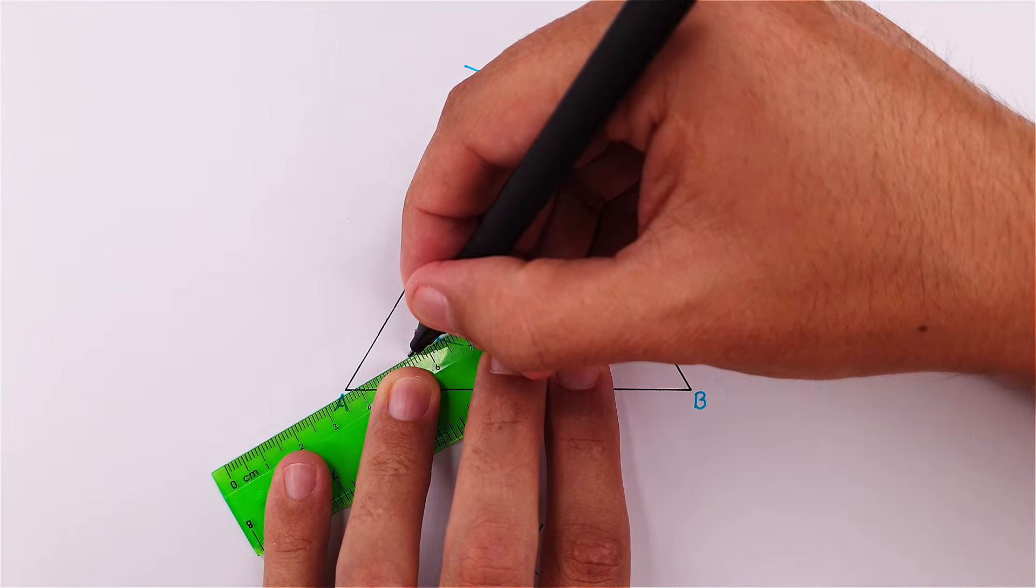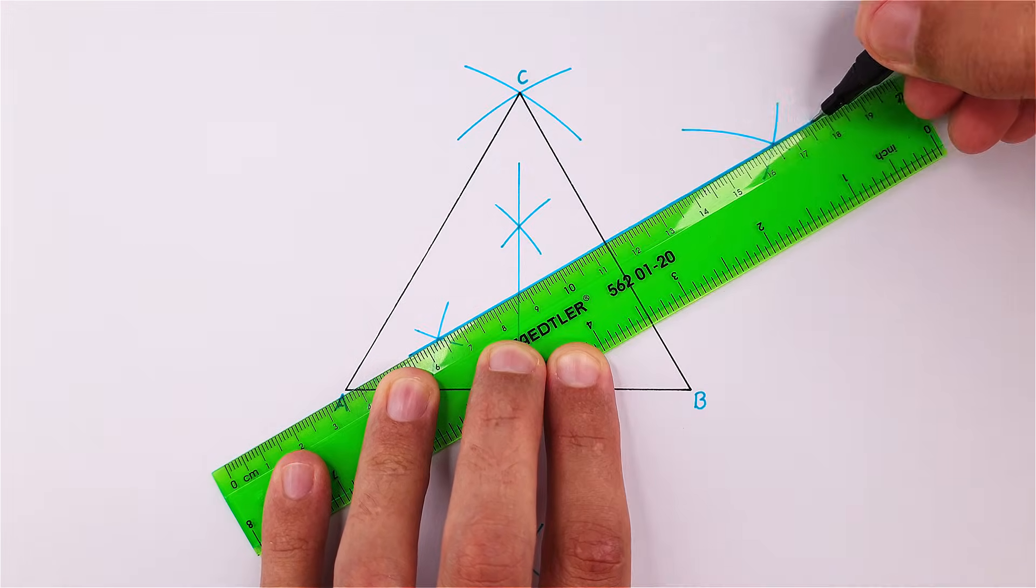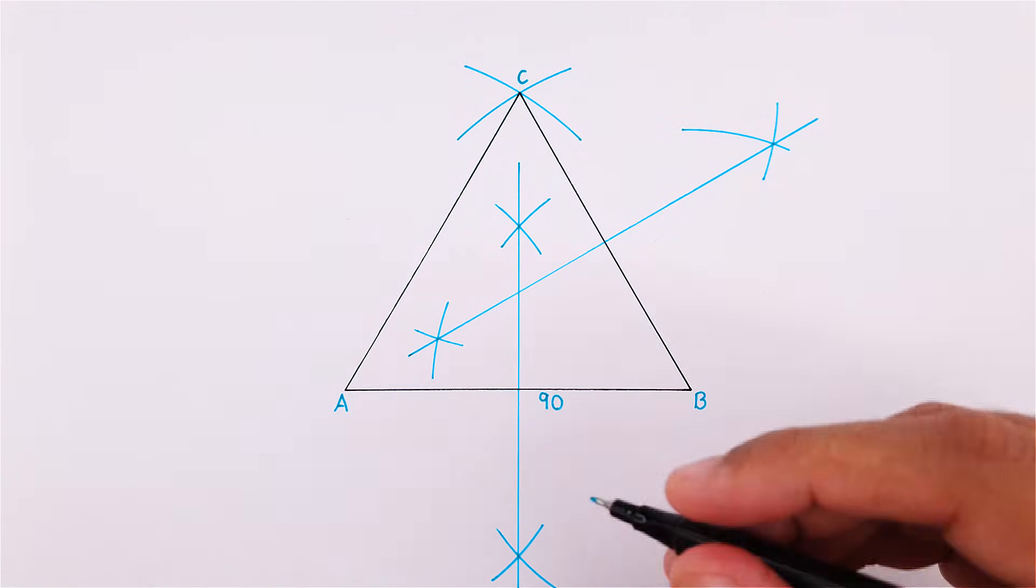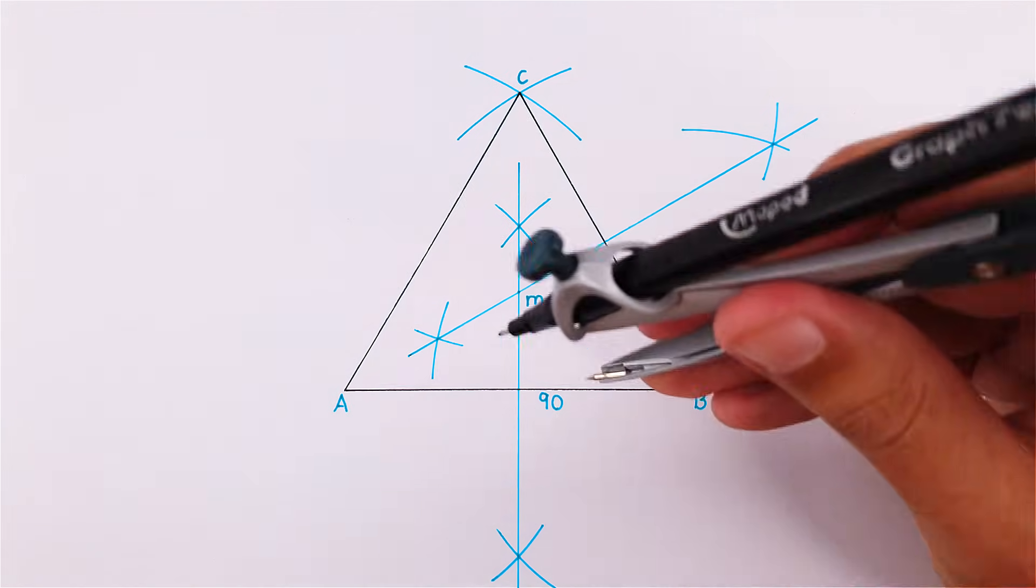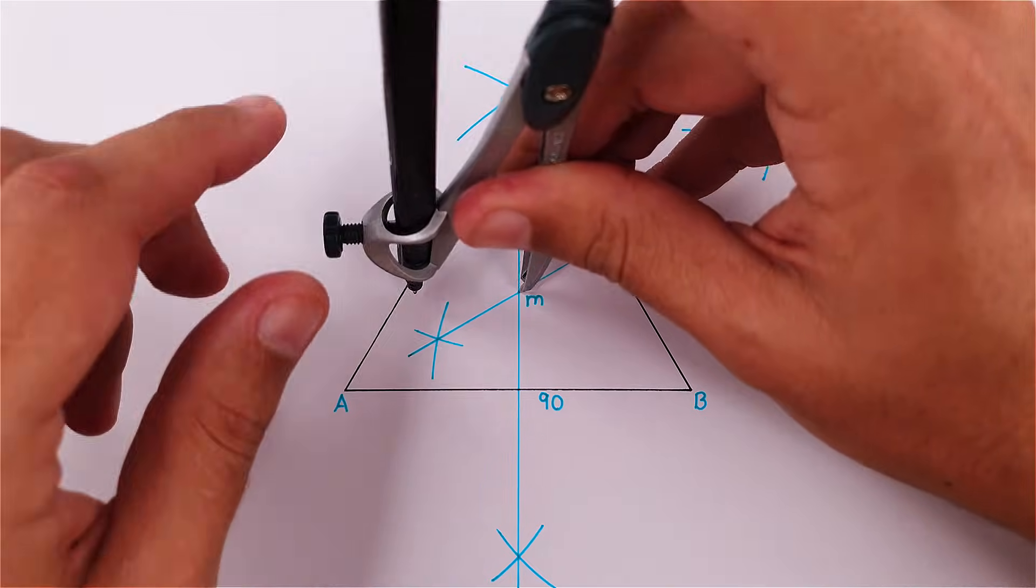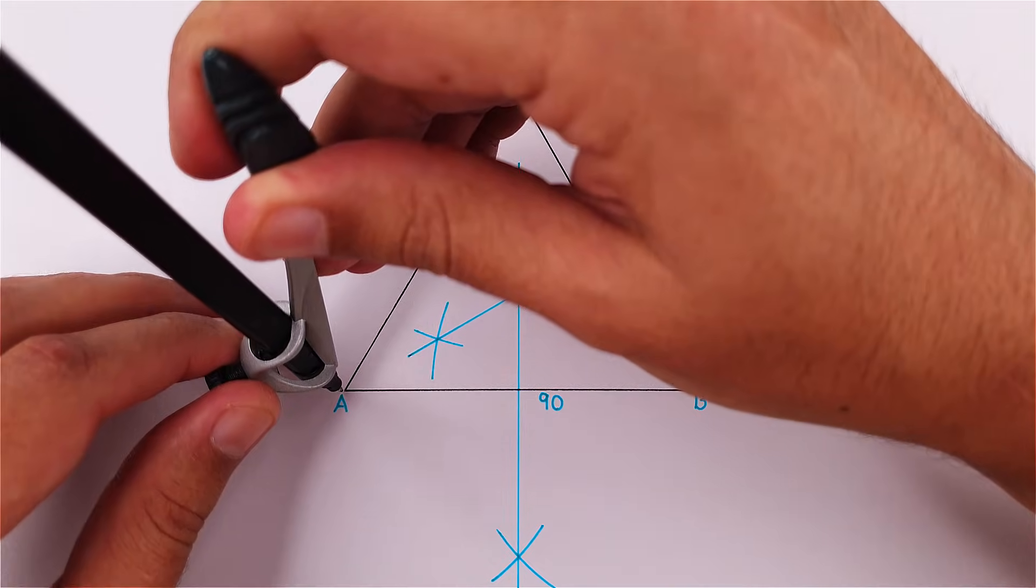Where our two perpendicular bisectors intersect is our circumcenter, or circle center point. Place your compass on this point and adjust it to any one of your vertices or angles and draw your circumscribed circle.